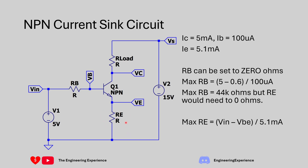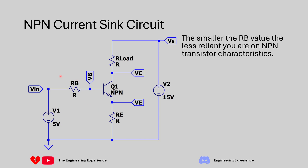We can also calculate the maximum RE value. The minimum is 0 ohms. The maximum is limited by the voltage appearing at VE, which is constrained by the power supply: (5V − 0.6V) divided by 5.1 milliamps gives a maximum RE of 862.7 ohms. For component selection, a smaller RB leads to a larger RE, which is better for circuit performance because you become less reliant on the NPN transistor's characteristics and internal parasitics.